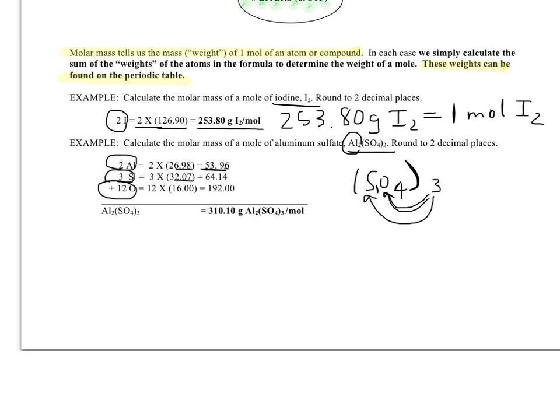Then if you look up sulfur, it weighs 32.07. We multiply that by 3 because there's 3 of them and we get 64.14. And then there are 12 oxygens. Each oxygen weighs exactly 16. So that gives us 192. Then we are going to add all of these things together. The 53.96 plus the 64.14 plus the 192, that gives us a final answer of 310.1 grams Al2(SO4)3 per mole.